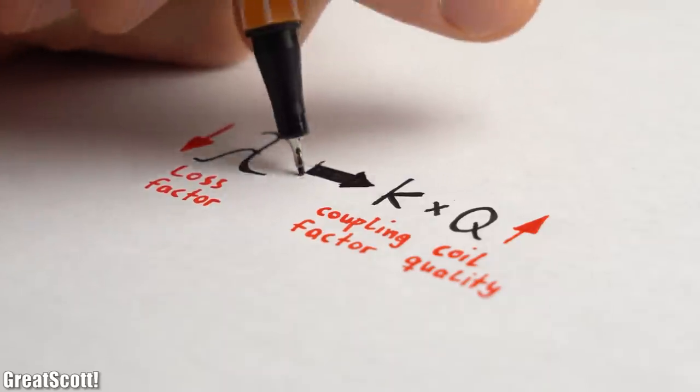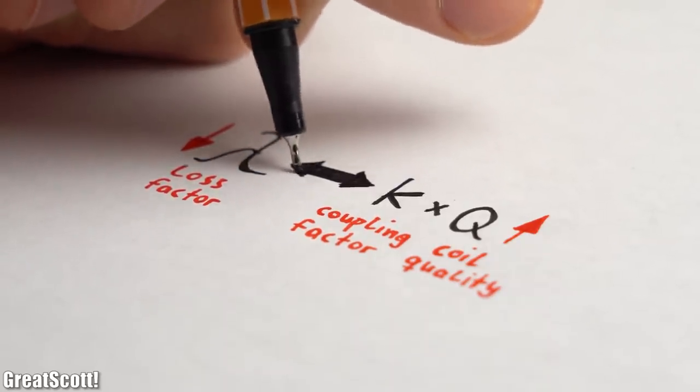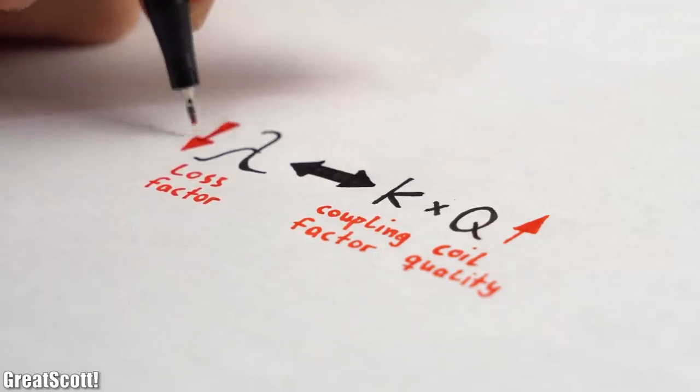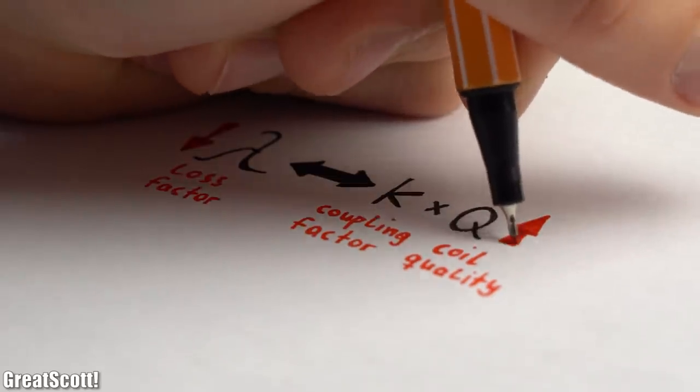Now to get an idea how the diameter and number of windings play a role, we have to go back to the theory where we learned that the loss factor decreases when the product of the coupling factor and coil quality increases.